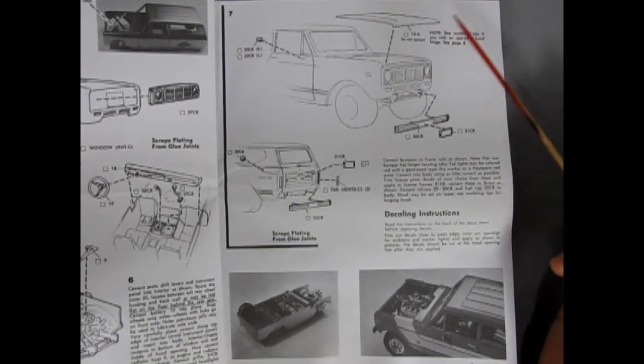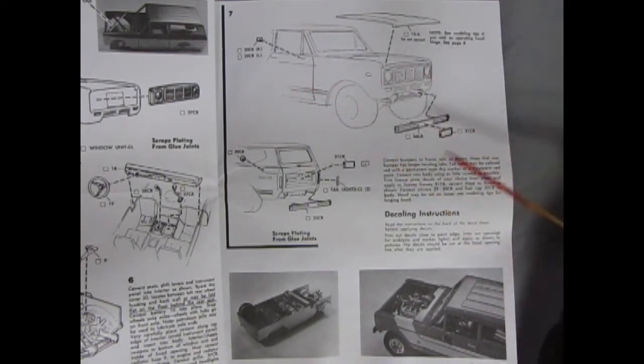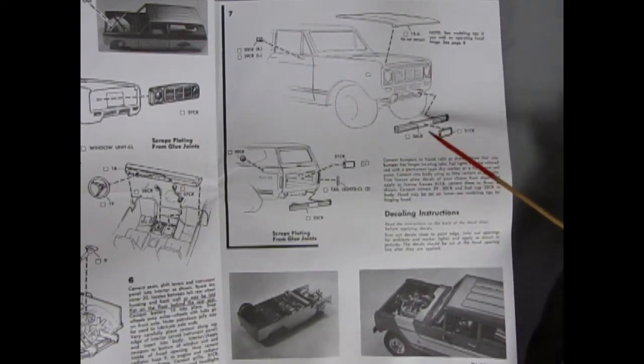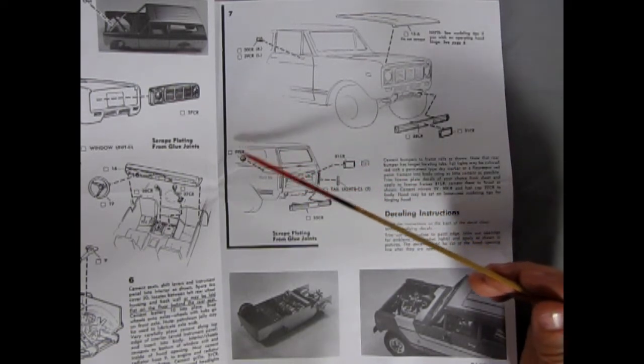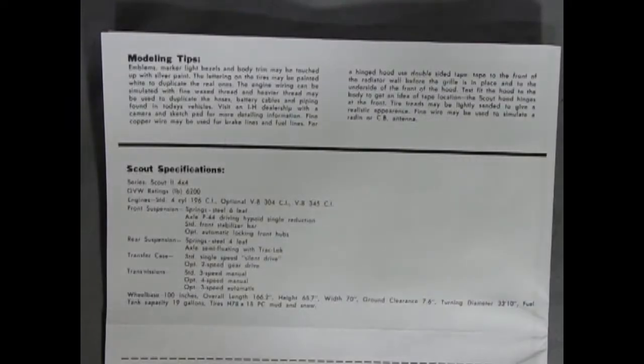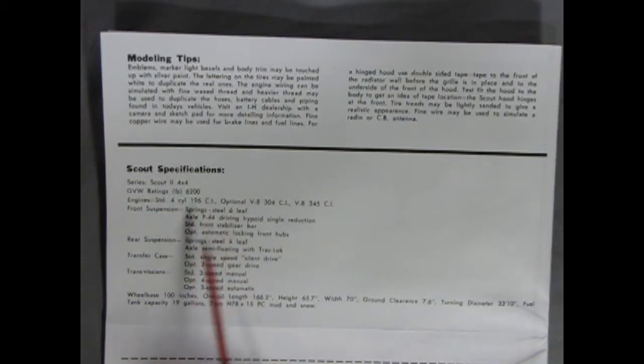And for panel seven we have the final bits of our international going together, which is dropping the hood on, putting on our side mirrors, front bumper, license plate shroud, then in the back license plate shroud again, tail lights, rear bumper, and the gas filler cap. And on the back we get some information about modeling tips and scout specifications.